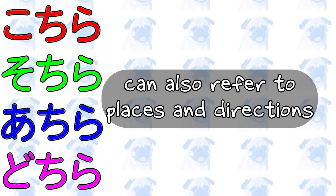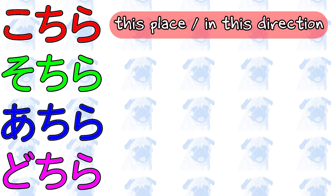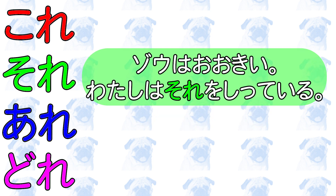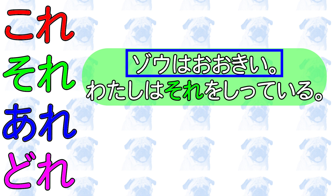One point of caution about こちら、そちら、あちら、どちら is that, as I will explain in a future episode, these words can also signify places and directions. こちら, for example, could mean 'this place' or 'in this direction', depending on the context. Finally, これ、それ、あれ、どれ can also refer to more abstract things. For instance, in 象は大きい、私はそれを知っている, それ refers to the fact expressed by the first sentence — namely, the fact that elephants are large.